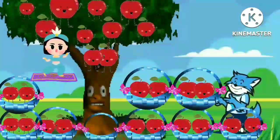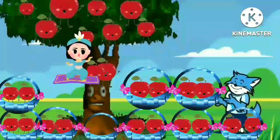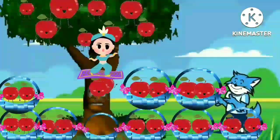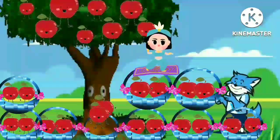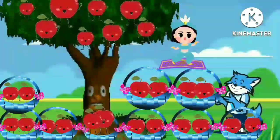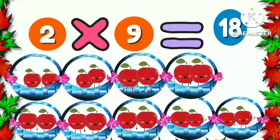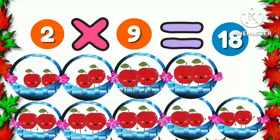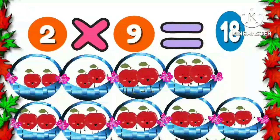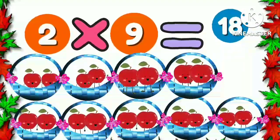Now a princess came and cut off two apples. The apples fell into the ninth basket. Now we have two apples in each nine baskets. Two nine times is eighteen.